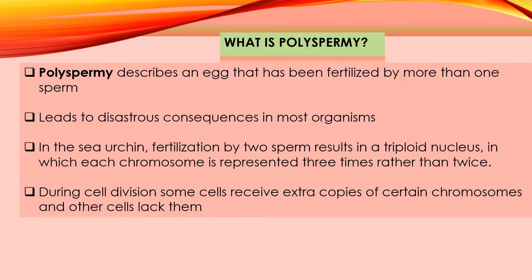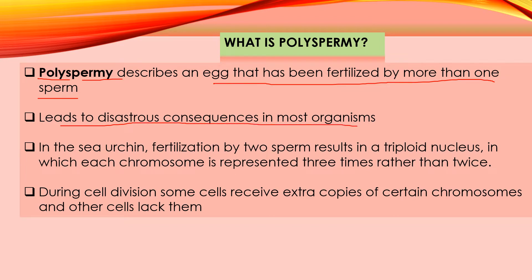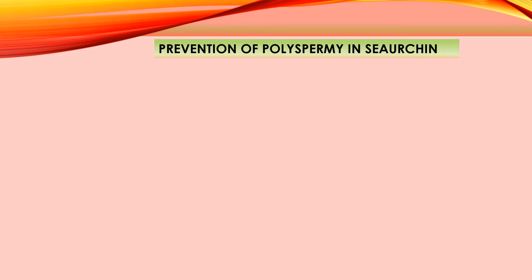What is polyspermia? 'Poly' means many and 'spermia' means sperm — polyspermia describes an egg that has been fertilized by more than one sperm. In normal fertilization, a haploid egg is fertilized by a haploid sperm, leading to the formation of a diploid zygote. But if polyspermia takes place, it leads to the formation of a triploid or tetraploid zygote, forming an abnormal embryo. During cell division, some cells receive extra copies of certain chromosomes and some cells lack chromosomes.